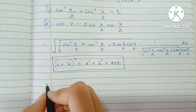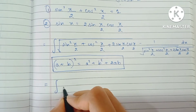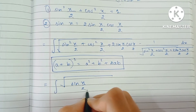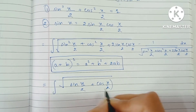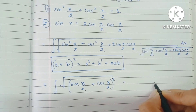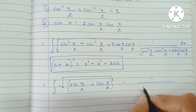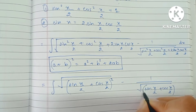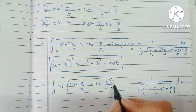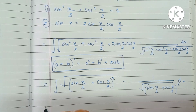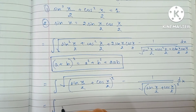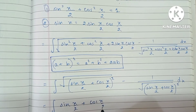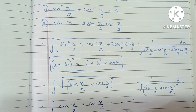We write the expression under the root as (sin(x/2) + cos(x/2))², and the same applies to the denominator of the second fraction. Since we have a square root of a perfect square, they cancel out, and our new integrand becomes: sin(x/2) + cos(x/2) minus 1 upon (sin(x/2) + cos(x/2)).